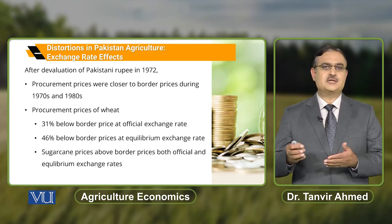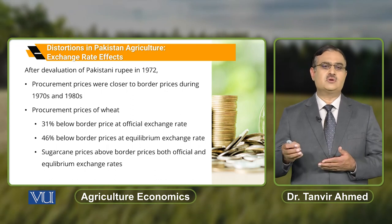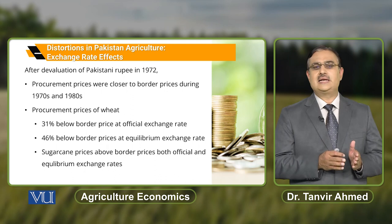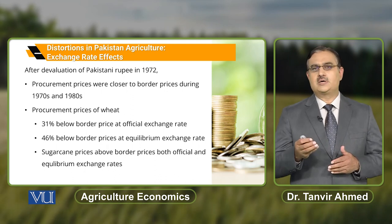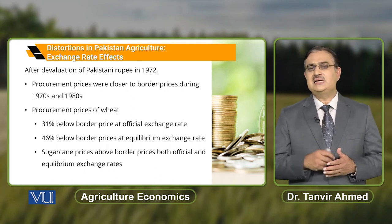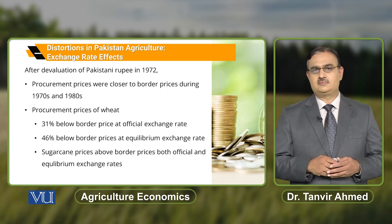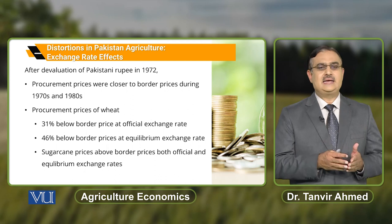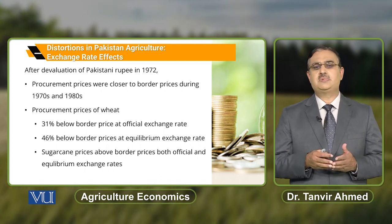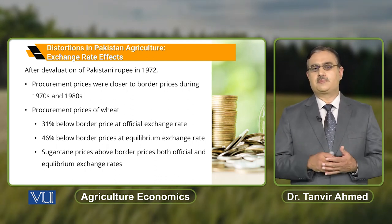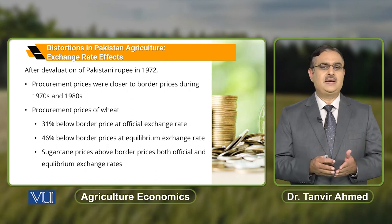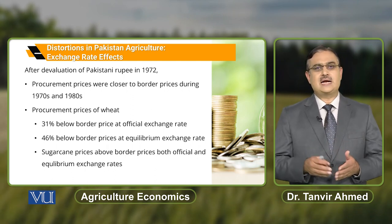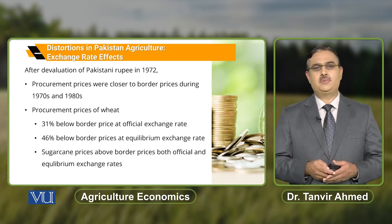With reference to the procurement price of wheat specifically, during this time period the procurement price of wheat is 31% below the border price at the official exchange rate, and approximately 46% below the border price at the equilibrium exchange rate. Sugarcane prices, however, are above the border price at both the official and the equilibrium exchange rates.